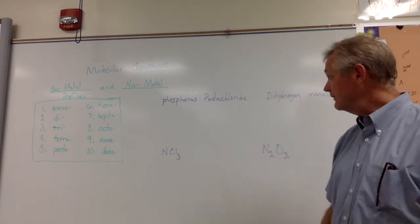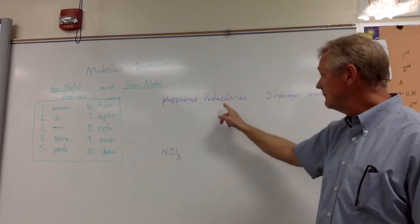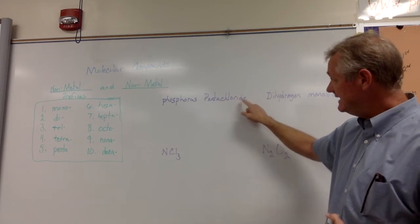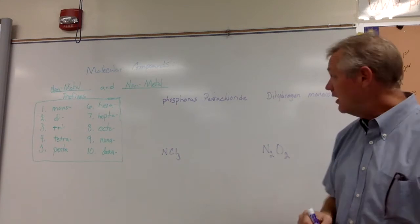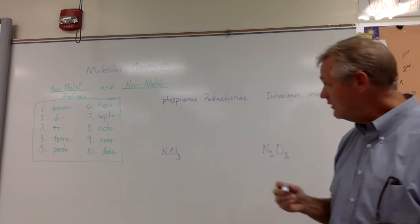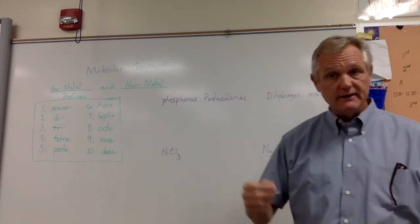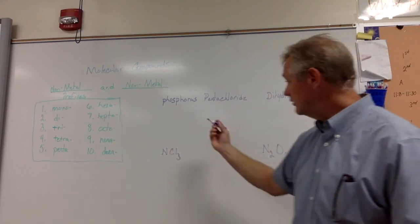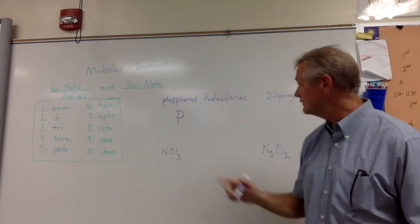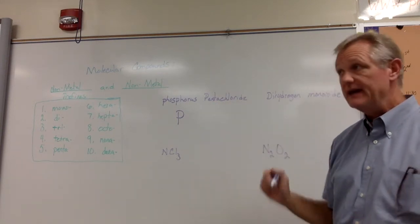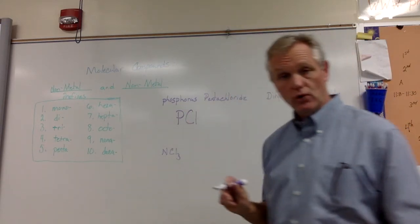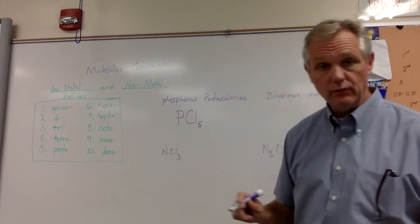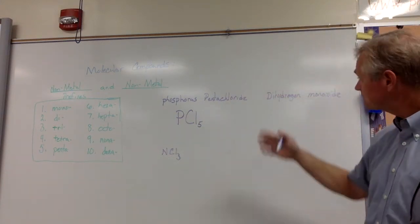In the first example, the rules are very simple. I have the name phosphorus pentachloride and I want to write its chemical formula. Notice how it ends in '-ide,' which means it's binary — it only contains two elements. Phosphorus has no mono prefix, so when the first element has no prefix, it is just one — you don't write mono. So it's capital P. Then pentachloride: chloride refers to Cl, which is chlorine, and penta is the prefix for five. So that tells us we have five chlorines: PCl5. That's phosphorus pentachloride.